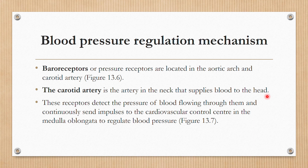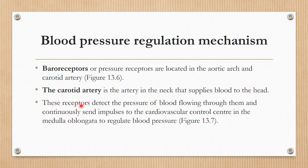That's why when bad guys want to threaten or kill someone, they cut the neck — they are actually cutting the carotid artery. These receptors detect the pressure of the blood flowing through them and continuously send impulses to the cardiovascular center.